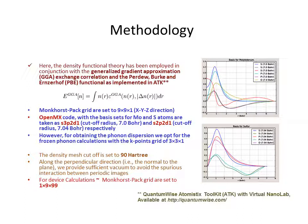More precisely, the configuration of Mo and S atoms have been adopted as S3P2D1 with cutoff radius 7 bohr and S2P2D1 with cutoff radius 7.04 bohr respectively.